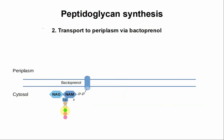So the next thing that happens is Lipid 2 is going to be grabbed by a kind of enzyme called a flippase. It's going to flip the whole thing in the plasma membrane - it's inverted and ends up on the other side. The lipid part of the bactoprenol stays in the membrane, but the NAG-NAM pentapeptide is now in the periplasm. So bactoprenol is called the lipid transporter of peptidoglycan subunits.